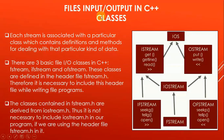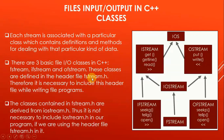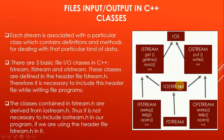Now for file input/output, we discuss classes. Each stream is associated with a particular class which contains definitions and methods for dealing with that particular kind of data. There are three basic file I/O classes in C++: fstream, ifstream, and ofstream. These classes are defined in the header file fstream.h, and therefore it is necessary to include this header file when writing file programs. The classes in fstream.h are derived from iostream.h, so it is not necessary to include iostream.h separately when using fstream.h, because it already inherits all the features of iostream.h.